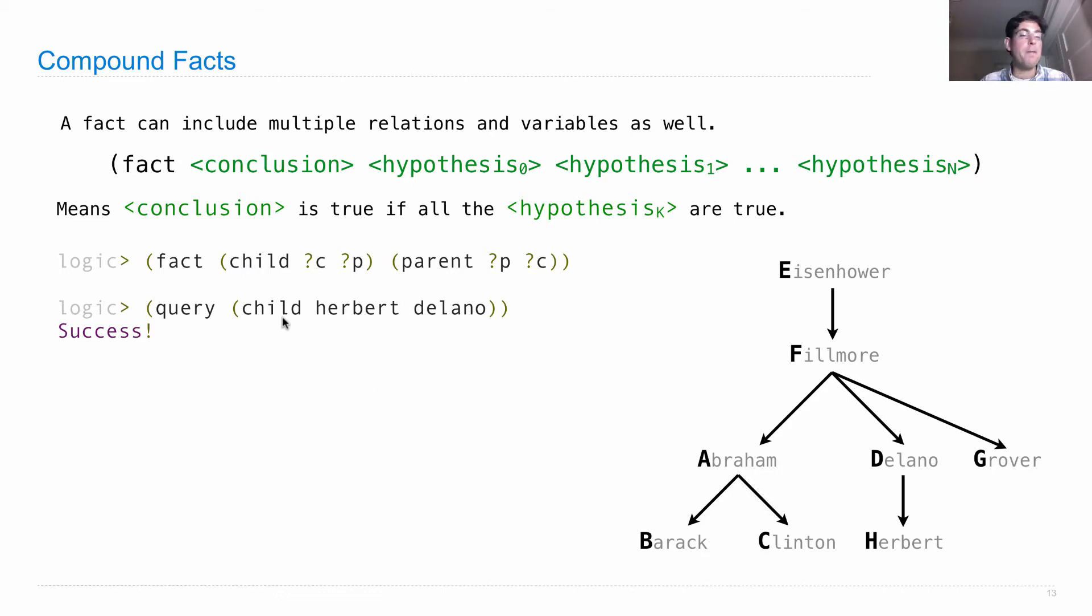There are no variables in this query. And that's okay. It doesn't print out a binding between variables and values because that's not needed. All it's telling you is that it is the case that there's a child relationship between Herbert and Delano. And if we ask if there's a child relationship between Eisenhower and Clinton, well, that would only be true if Eisenhower was Clinton's parent, which it's not. So that would write, failure.